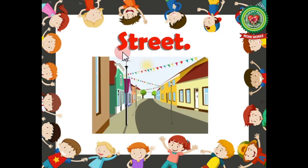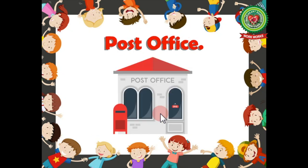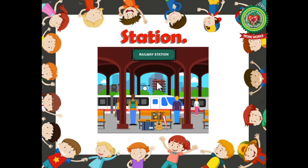Street — s-t-r-e-e-t, street — name of a place, so noun. Post office — p-o-s-t-o-f-f-i-c-e, post office — name of a place, so noun. Station — s-t-a-t-i-o-n, station — name of a place, so noun. That means every place has a name, and these naming words are called nouns.